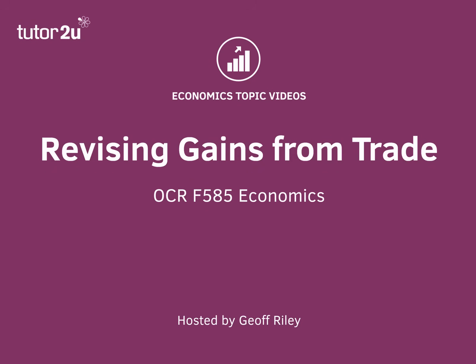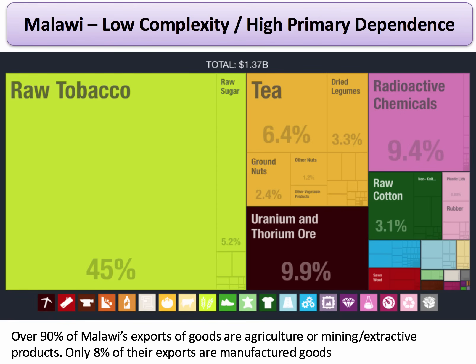Let's look at the theory of comparative advantage as it relates to trade between two countries mentioned in extract one: Malawi and Australia. Malawi is a country with a high level of primary product dependency. Nearly half of its goods exports are raw tobacco, and it also exports products such as raw sugar, tea, and raw cotton. Indeed, less than 10% of their goods exports are manufactured products.